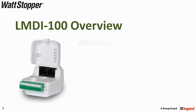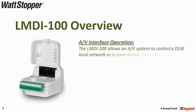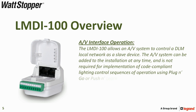The LMDI100 allows an AV system to control a DLM local network as a slave device. The AV system can be added to the installation at any time and is not required for implementation of code-compliant lighting control sequences of operation using plug-and-go or push-and-learn.